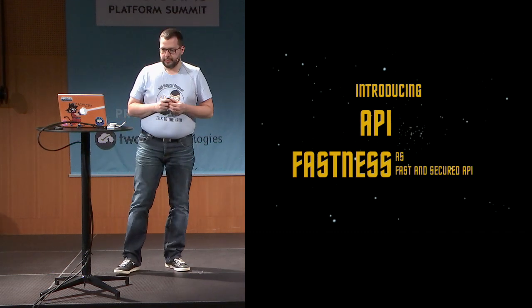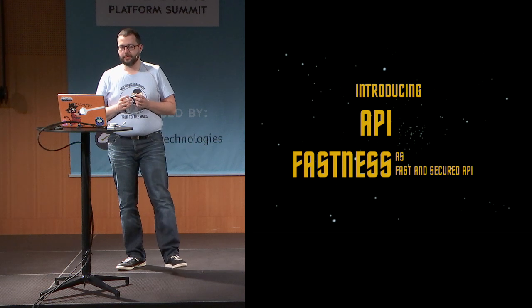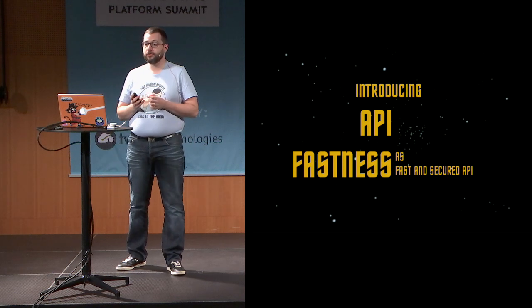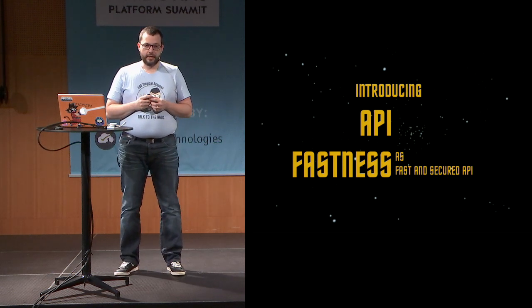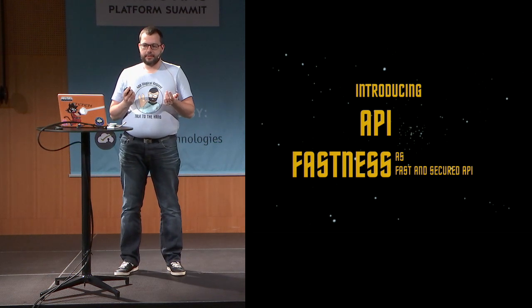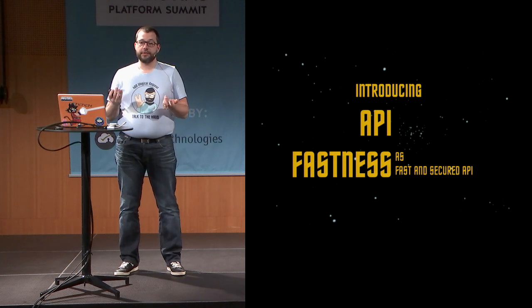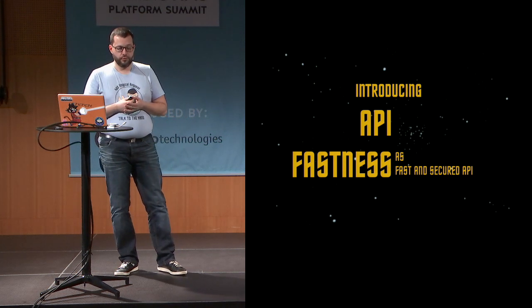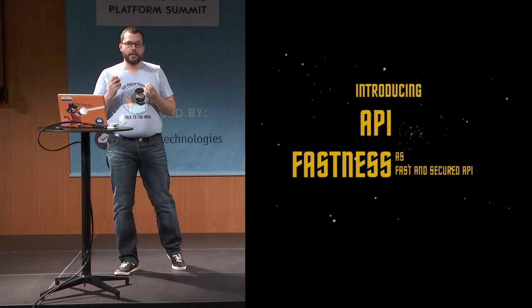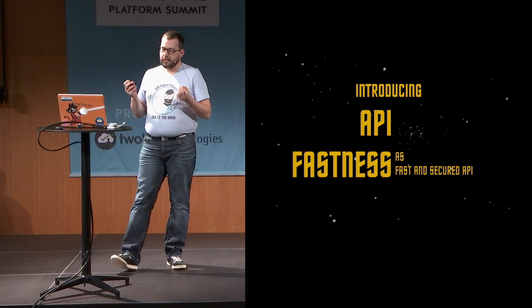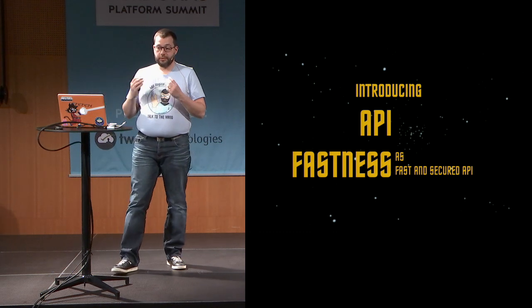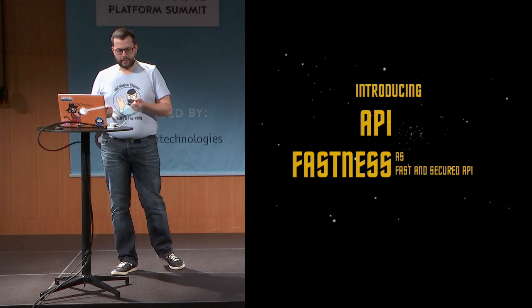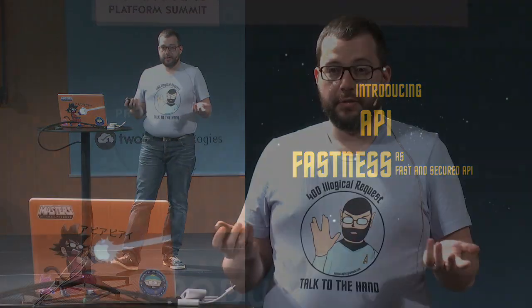Fastness — it means being fast but also being secured. API fastness is probably what every API provider aims to: being able to deliver APIs quickly but securely. How to achieve API fastness is what we're going to see now.